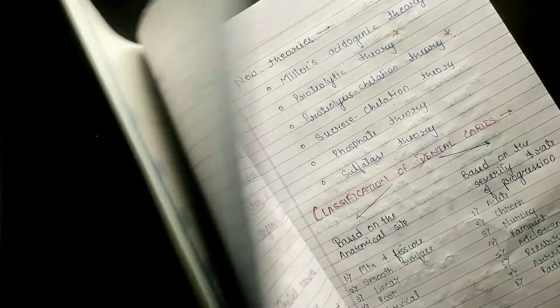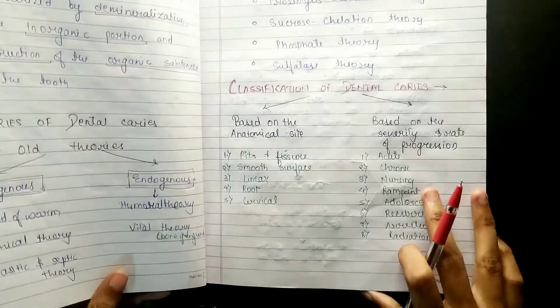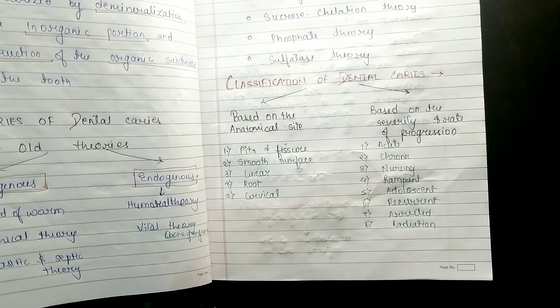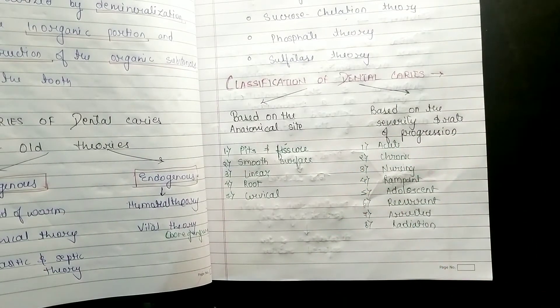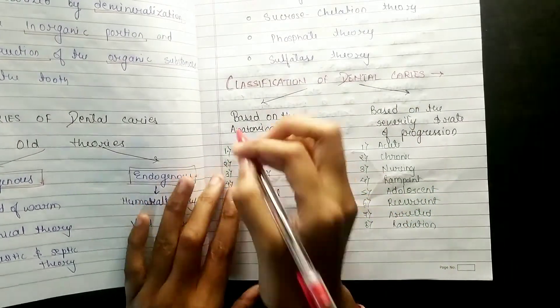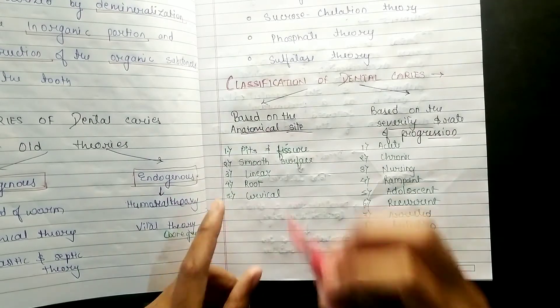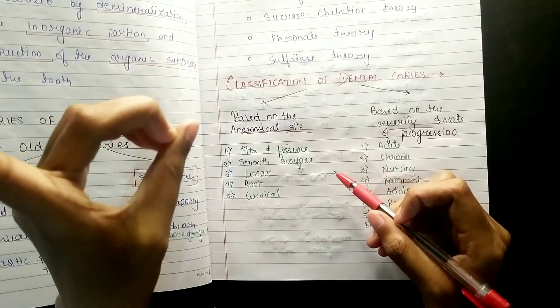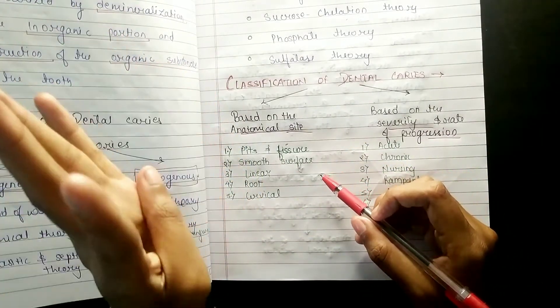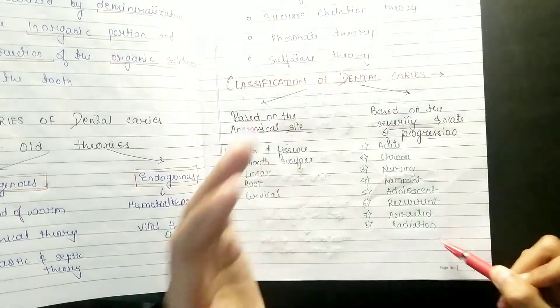Classification of dental caries: mainly classification I don't ask, but I have seen some long notes that they are asking for the classification of dental caries. It is again divided into two: based on anatomical site and based on severity and rate of progression.